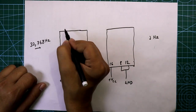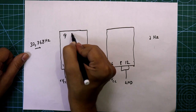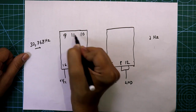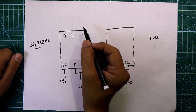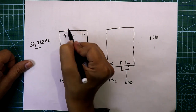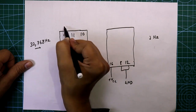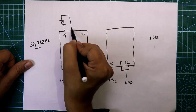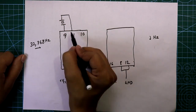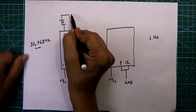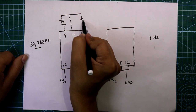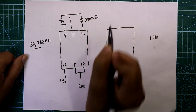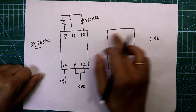Pins 9, 10, and 11 are used for the input clock signal. The crystal oscillator is connected between pin 9 and pin 11. Between pin 11 and pin 10, we connect a 330 kΩ resistor. For the second IC, we only need the input clock signal at pin 11.